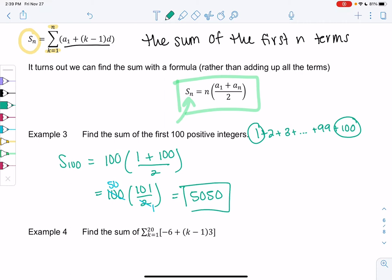I have another arithmetic sequence. You'll notice it fits the pattern. We have a1 is negative 6 plus k minus 1 times a common difference of 3. So this is arithmetic as well.